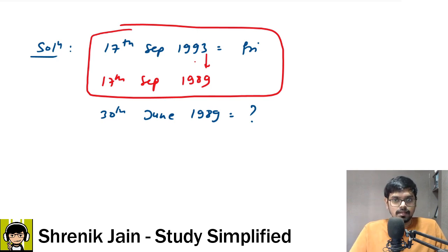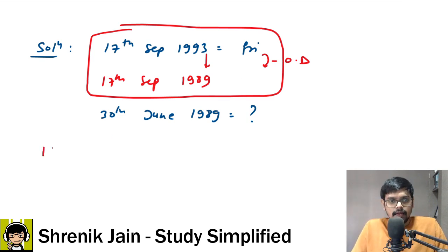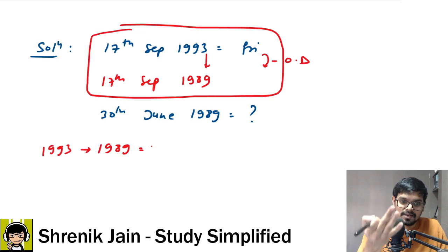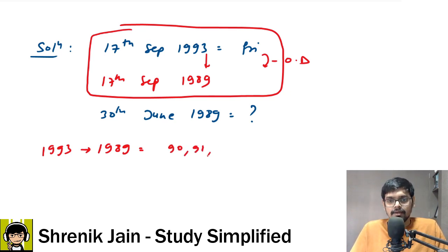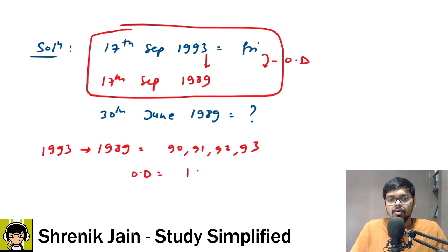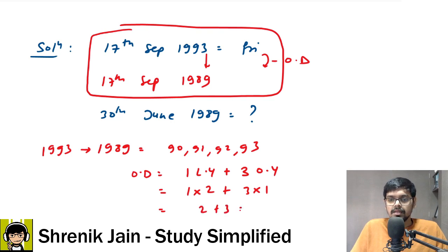As per the trick, check from 1993 to 1989 how many odd days there are, then subtract those odd days to get the respective day. From 1989 to 1993 there are four years: 1990, 1991, 1992, and 1993. Among these, only 1992 is divisible by 4, so there is one leap year and three ordinary years. The number of odd days is: one leap year gives 2 odd days, and three ordinary years give 3 odd days — total 5 odd days.